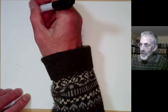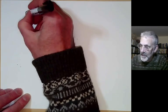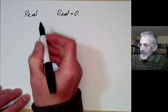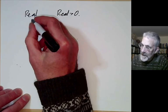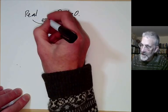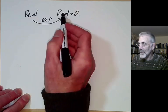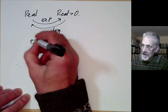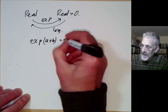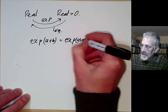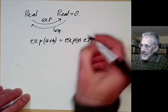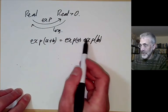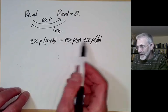A well-known example from calculus: if you take the real numbers under addition and the positive real numbers under multiplication, these two groups are isomorphic, because we have the exponential map for relabeling and its inverse the logarithm map. You notice that exp of a plus b equals exp a times exp b, so this map really is turning addition into multiplication.